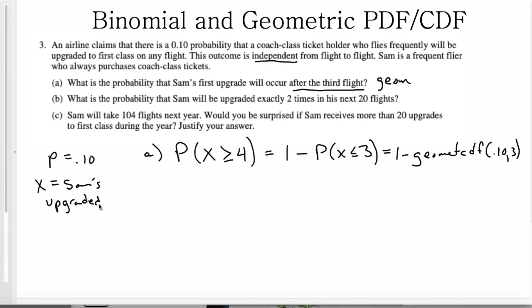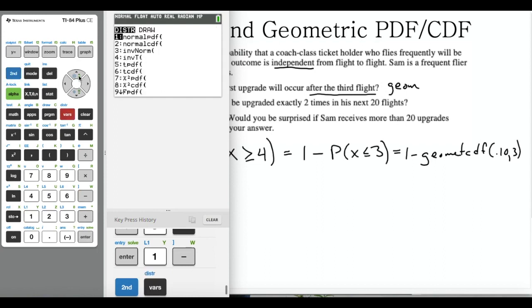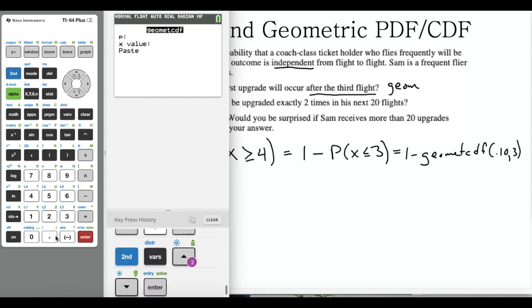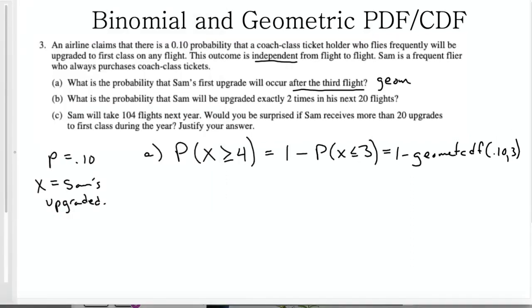So 1 minus geomet CDF, and you only have two inputs for geomet CDF. That is the probability of success and the number of trials that you want the first success to occur on. So just for clarity here, I'm going to define the random variable x. You should always do that on a free response question. I'm going to go to my calculator and type in 1 minus geomet CDF is found in the second vars, the distribution menu. I'm going to enter the values here. And we get a probability of 0.729. Also, when you write down calculator input notation, you should always label what the numbers represent. So 0.10 is the p, 3 is the x.